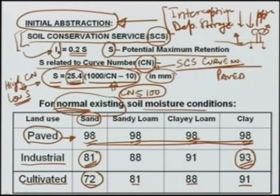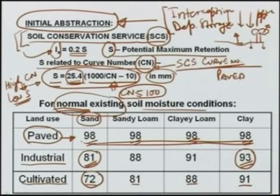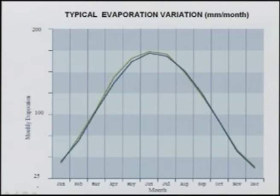It is an empirical method; tables of curve numbers are available for different types of land use, soils, and antecedent moisture conditions. Under normal conditions we have shown the table; if dry or wet, there are other tables or equations. After initial abstraction, we have other abstractions like evaporation, infiltration, and transpiration.